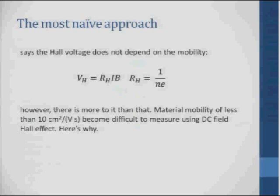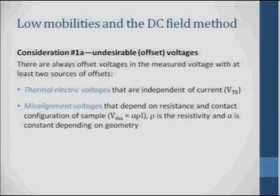Well, the problem is when the mobilities get to be about less than 10, there's difficulty in measuring it with a DC effect, because you have other voltages that you measure besides the Hall voltage. That is at zero field, you don't measure zero volts. There are two major sources of those. One are thermoelectric voltages that are independent of the current. It's just the voltage that develops because you have a junction between two different materials. And then there's a misalignment voltage that depends on the resistivity and contact configuration of the sample.